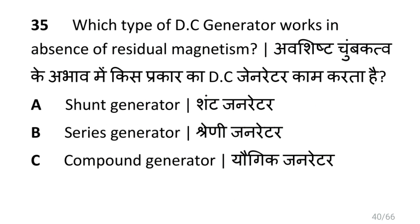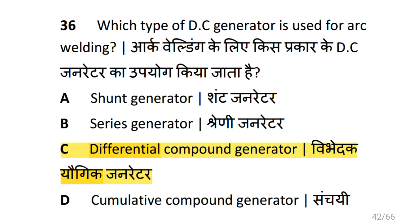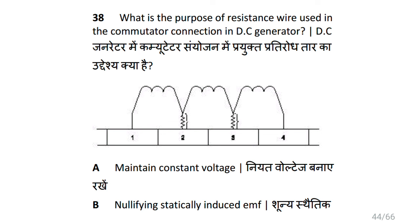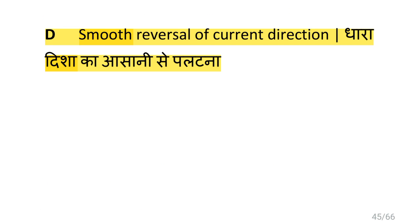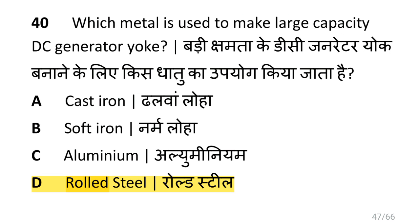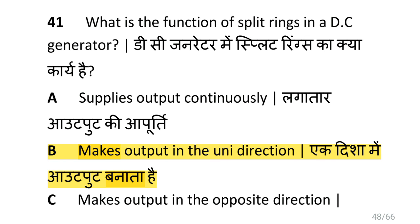Which type of DC generator works in the absence of residual magnetism? That is separately excited generator. Which type of DC generator is used for arc welding? That is differential compound generator. What is the property of wave winding in DC generator? That is low current and high voltage. What is the purpose of resistance wire used in commutator connection in DC generator? That is smooth reversal of current direction. Why are solid poles used in a DC generator? To reduce the reluctance of the magnetic path. Which metal is used to make the large capacity DC generator yoke? That is rolled steel. What is the function of split rings in a DC generator? That is to make output in one direction.